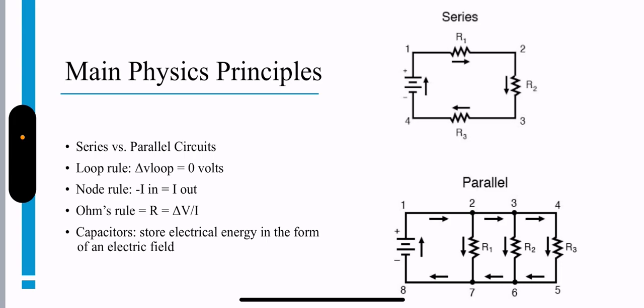The node rule is that the current in equals the current out always. Ohm's rule for a resistor is the change in potential difference over the current. Capacitors store electrical potential energy in the form of an electric field.